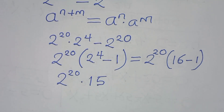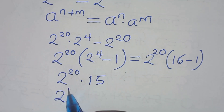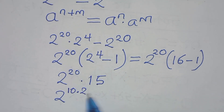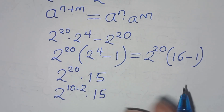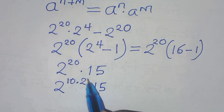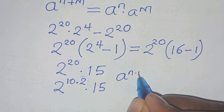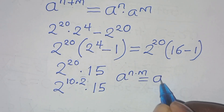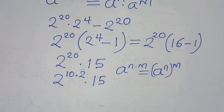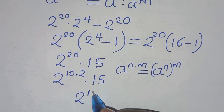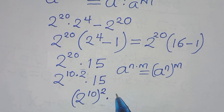The next step: we can express 2 to the power 20 as 2 to the power 10 times 2, then multiply by 15. Now, 2 to the power 10 times 2 is in the form of a to the power n times m, which we can express as a to the power n raised to power m. So in this case, we have 2 to the power 10, raised to the power 2, times 15.